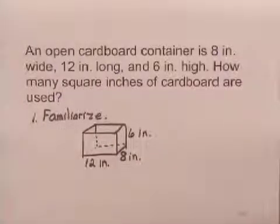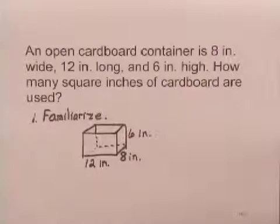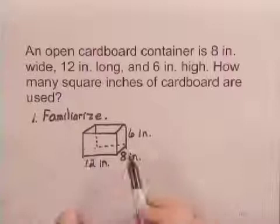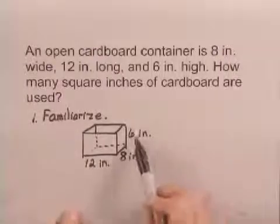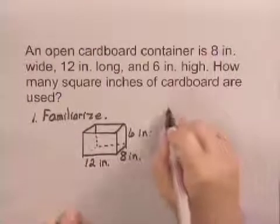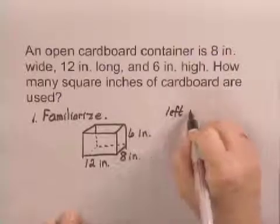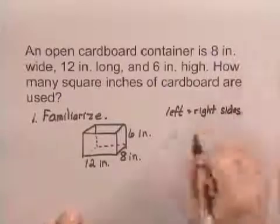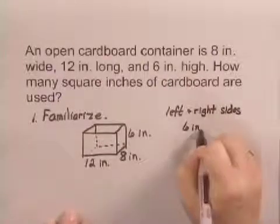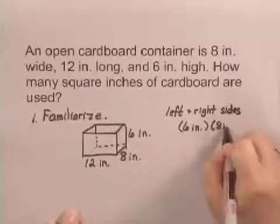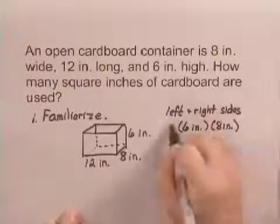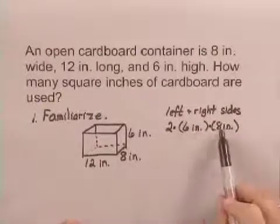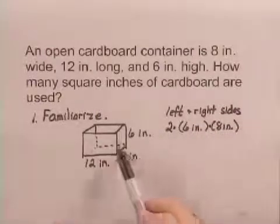Now in order to find the number of square inches of the cardboard, we're going to have to divide the box into different sides. If we look at the left and the right side, each of those sides has an area of 8 times 6 square inches. So we have the left and the right sides. Each of those would be 6 inches times 8 inches for the area, and there are 2 of them. So we have 2 times 6 inches times 8 inches should give us the area of the left and the right sides.